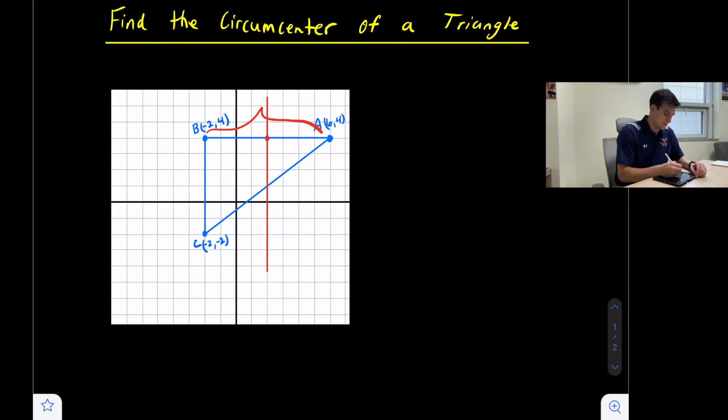Now we can look at side BC and the length here is one, two, three, four, five, and six. Since the length of BC is six, the midpoint would be one, two, and three.